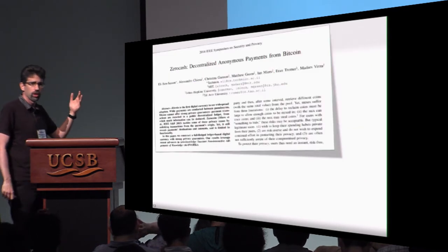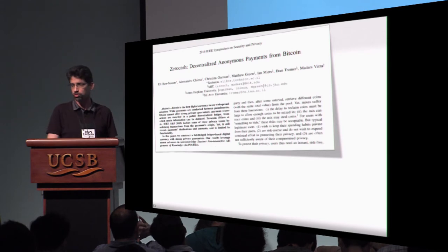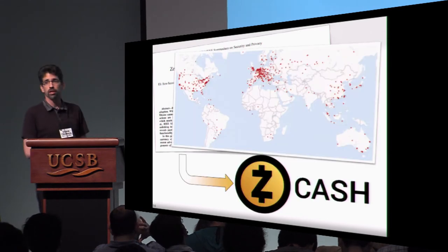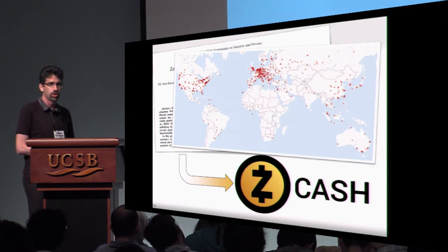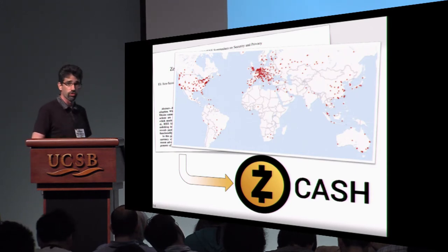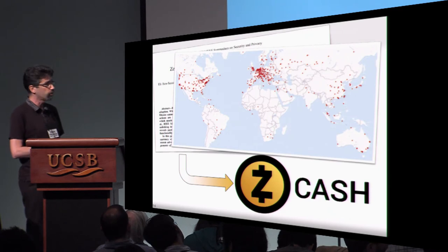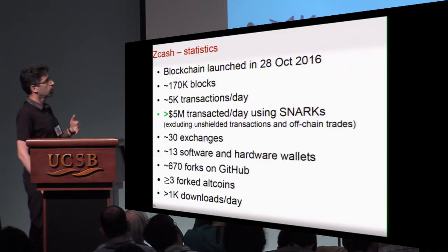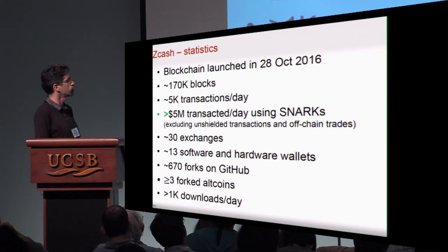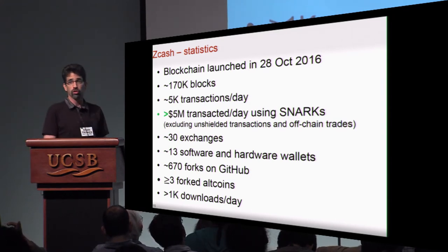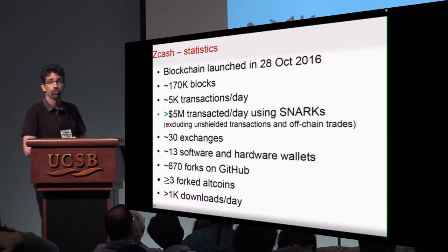This started as a paper at Oakland 2014, and ever since then we've been working on taking this into a real-world cryptocurrency, and that indeed happened last October. After several years of work, a dedicated engineering team, and a company established to fund those engineers, the new cryptocurrency was launched. This is the node map a few days after launch. As of today, we have an ever-growing blockchain. About $5 million are transacted using SNARKs every day, and this is just a lower bound because some of these transactions are protected by zero-knowledge — we don't know they're there.